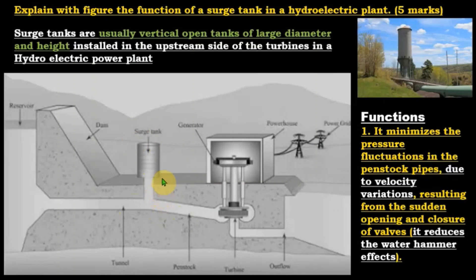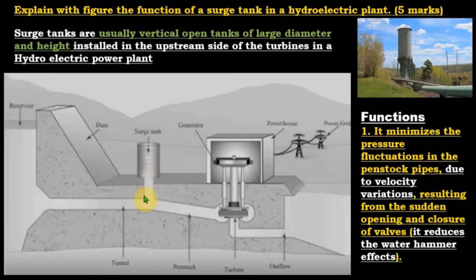What does the surge tank do? The surge tank absorbs pressure variations. For example, consider the sudden closure of a valve — the pipeline flow is subjected to deceleration, the momentum is destroyed, and automatically that excess water flows into the surge tank. This dampens out the pressure waves formed in the pipeline due to sudden velocity variations from sudden closure and opening of valves.